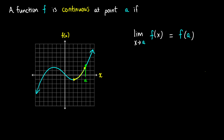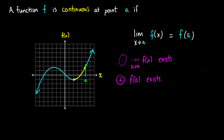When we do problems and try to check continuity, we're looking for three things. One: we have to show that the limit as x approaches a of f of x exists. Two: we want to show that f of a also exists. And three: we need both of these to be equal to each other. Once we show that one and two exist, we also need to show that they are the same thing.